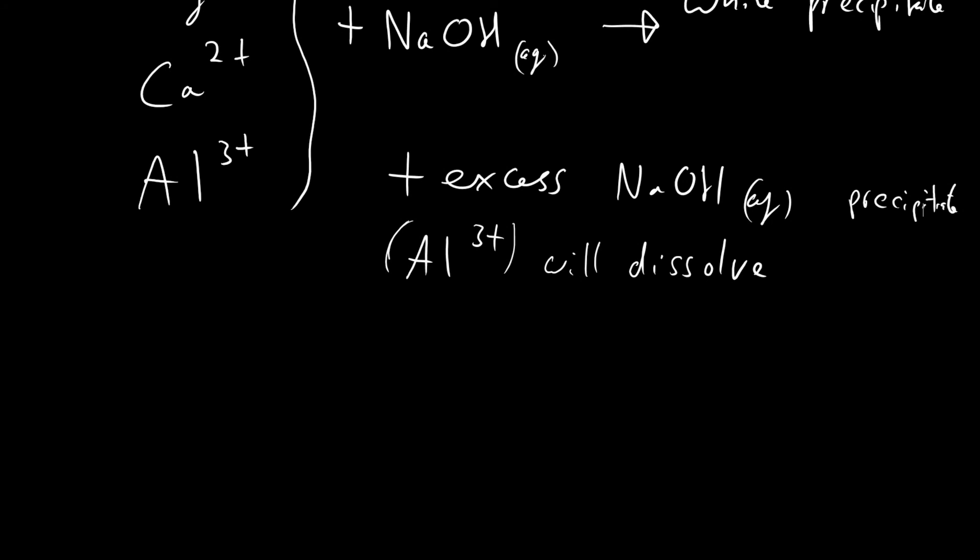We have a test for these three ions. If we add sodium hydroxide and get a white precipitate, we know our solution contains one of those three. If we add more sodium hydroxide and the precipitate dissolves, we can say it was aluminum 3+ ions.